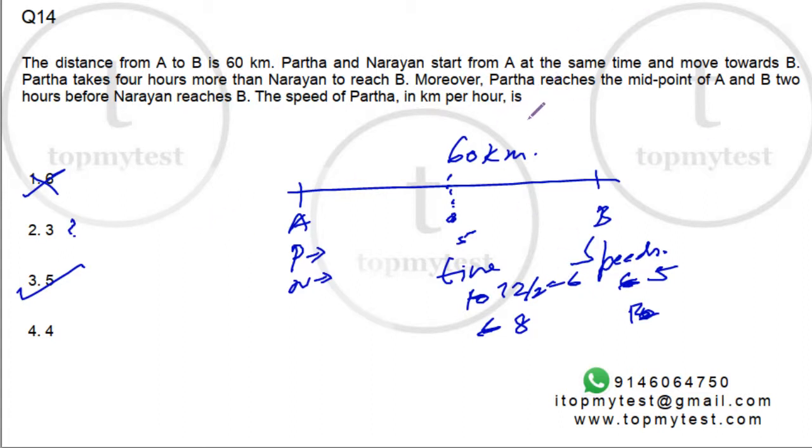So option 3, speed = 5, is the correct choice. You can use the options if you know how to read the question properly — just put the values in and the job is done. That completes this one.